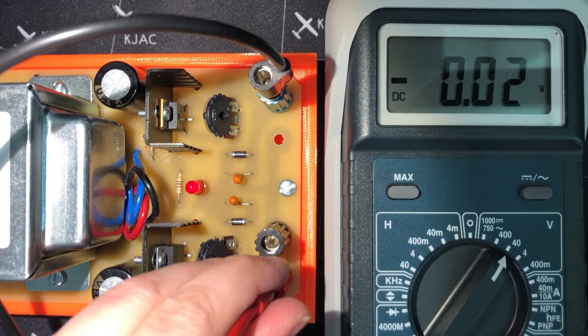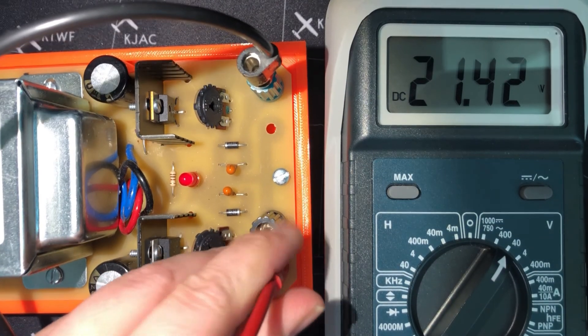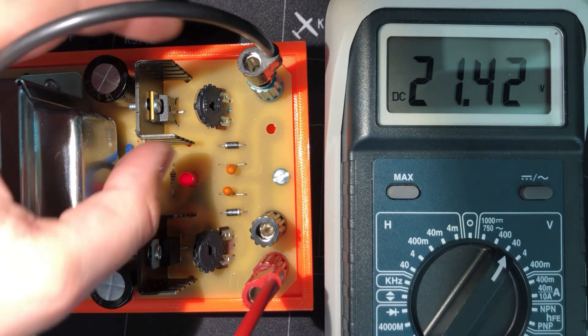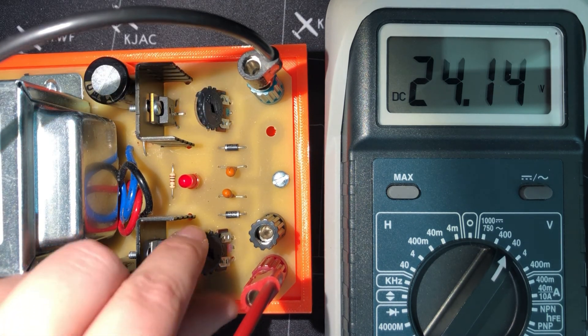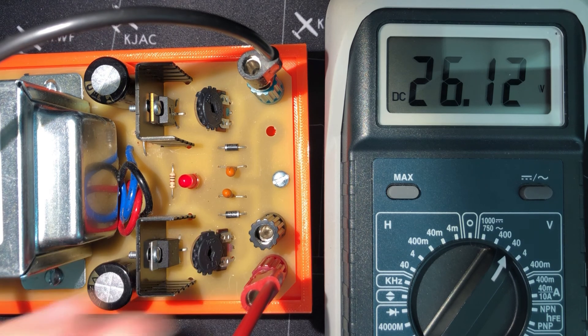When setting up the dual power supply, I recommend that you connect the binding posts that you'll be using to a voltmeter to confirm the output voltage or voltages. Dial the potentiometer knob until you get the desired result.